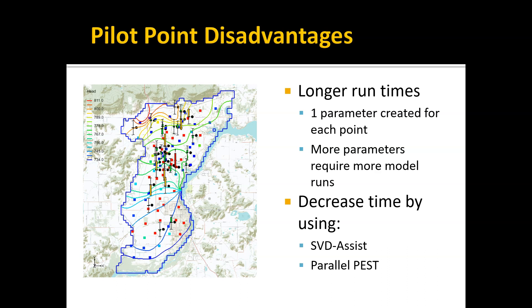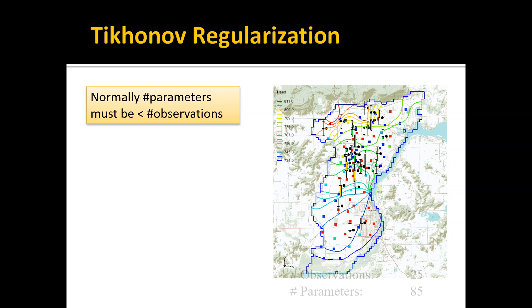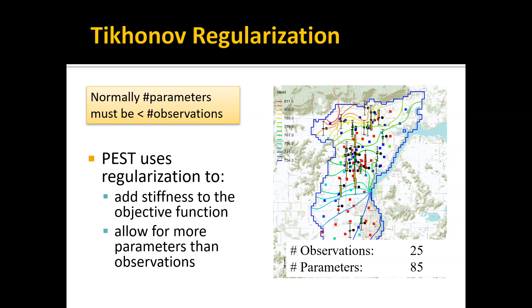Another thing we have to deal with is called Tikhonov regularization. Normally, the number of parameters in your model has to be less than the number of observations. We talked about this when discussing model calibration and automated parameter estimation. If that is not the case, the problem becomes numerically unstable. It turns out there's a way to get around this problem with PEST using this method called regularization. For example, this particular model has 85 parameters and only 25 observations, so there's clearly an imbalance, but we're able to get it to run just fine.